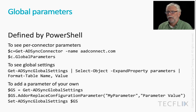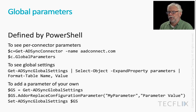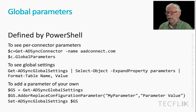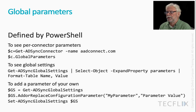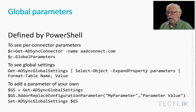Global parameters are defined by PowerShell. Using PowerShell, you can also see the per-connector parameters if you want, and the code for doing it is shown. To see the global settings, you would use the second script shown. And to add a parameter of your own, you would do that using the script shown — that would add a parameter called 'my parameter' with a particular parameter value. Once you've added parameters of your own, and we do have an example coming up later, you can freely use those in your own rules. Again, this gives you a way of pre-populating values — a little bit like a macro expansion.